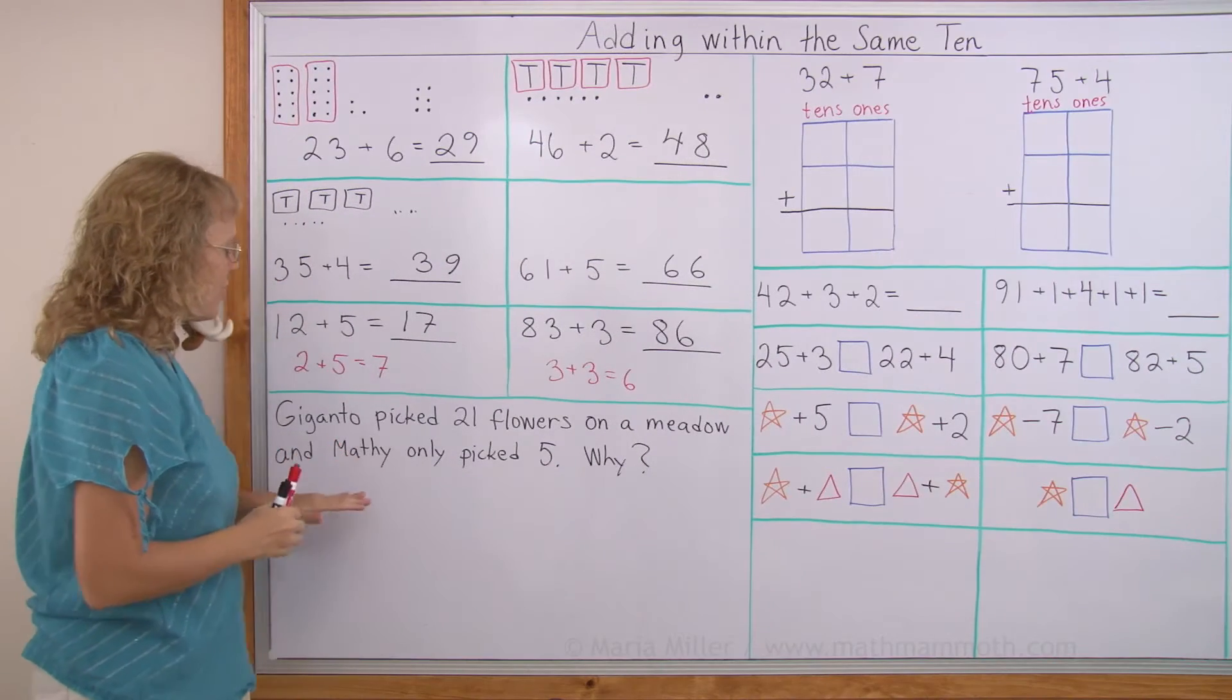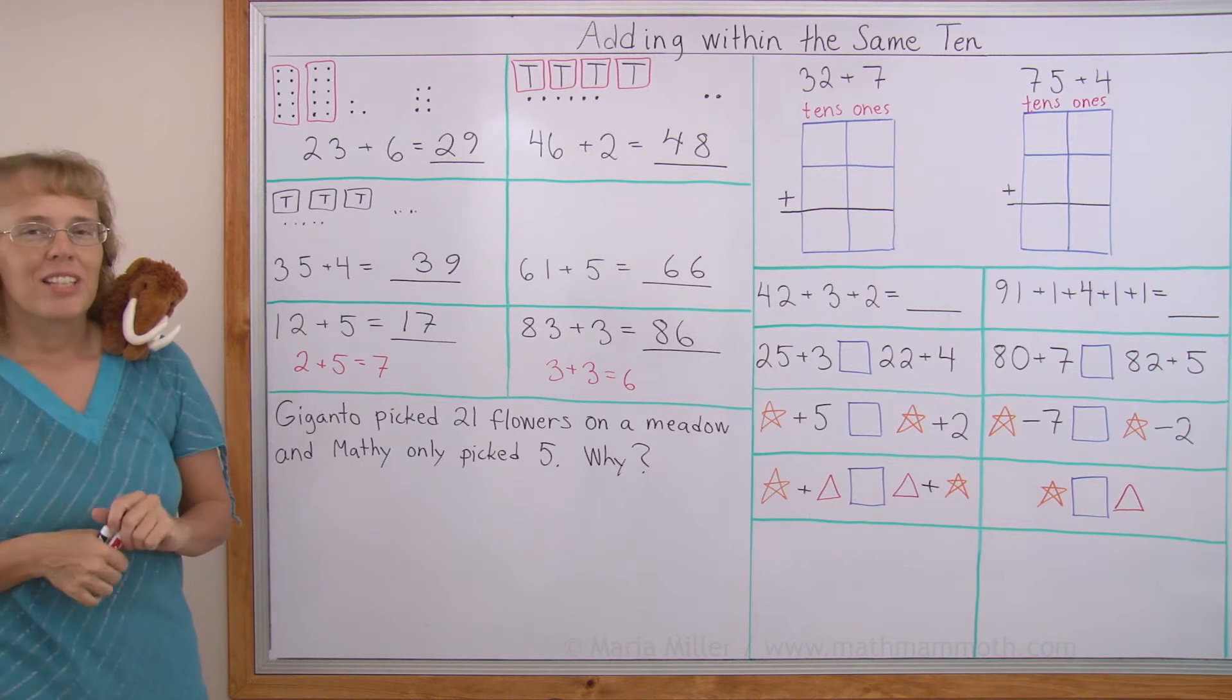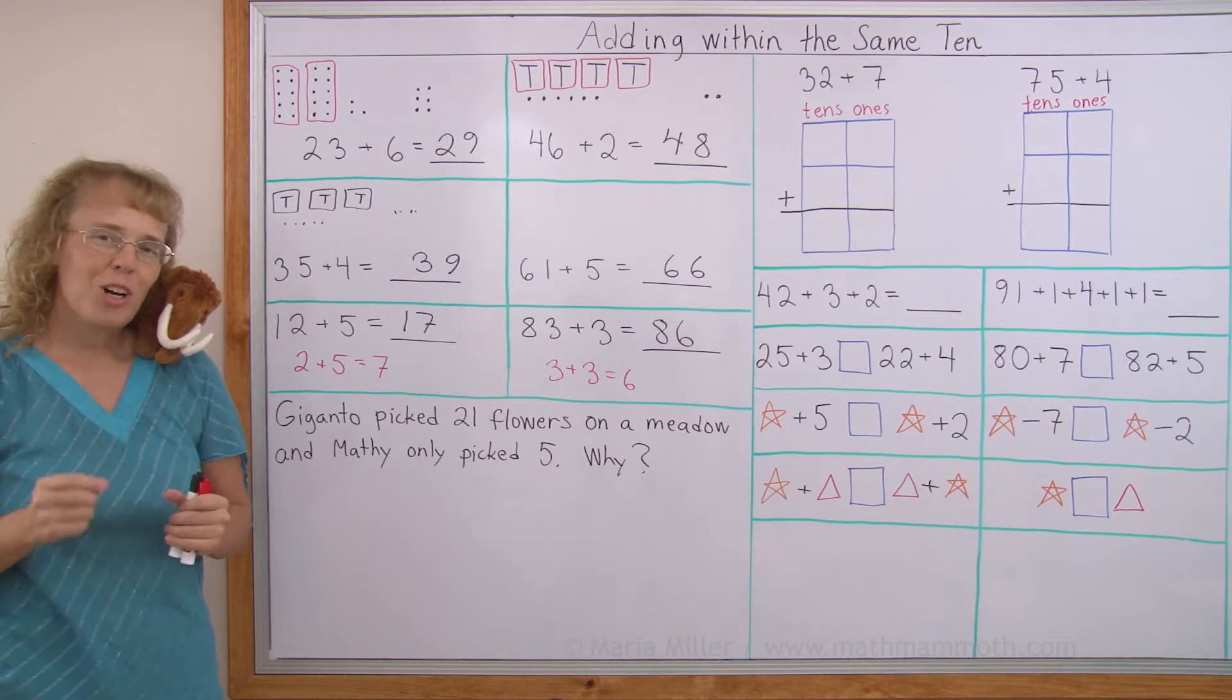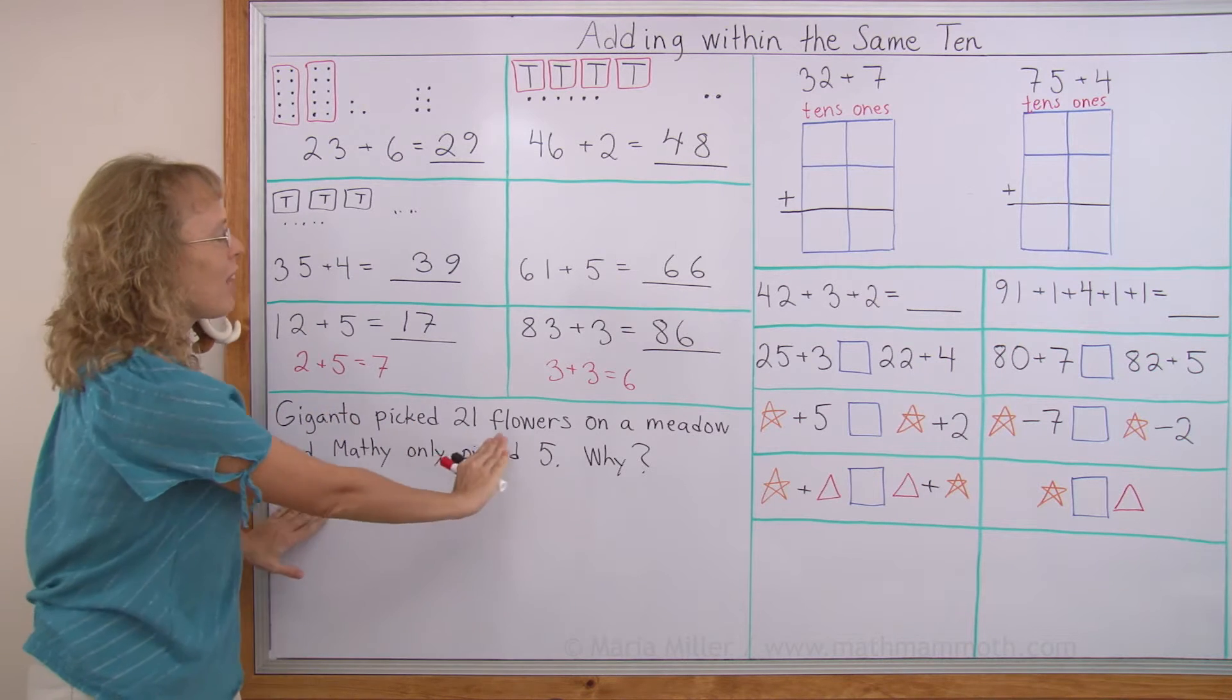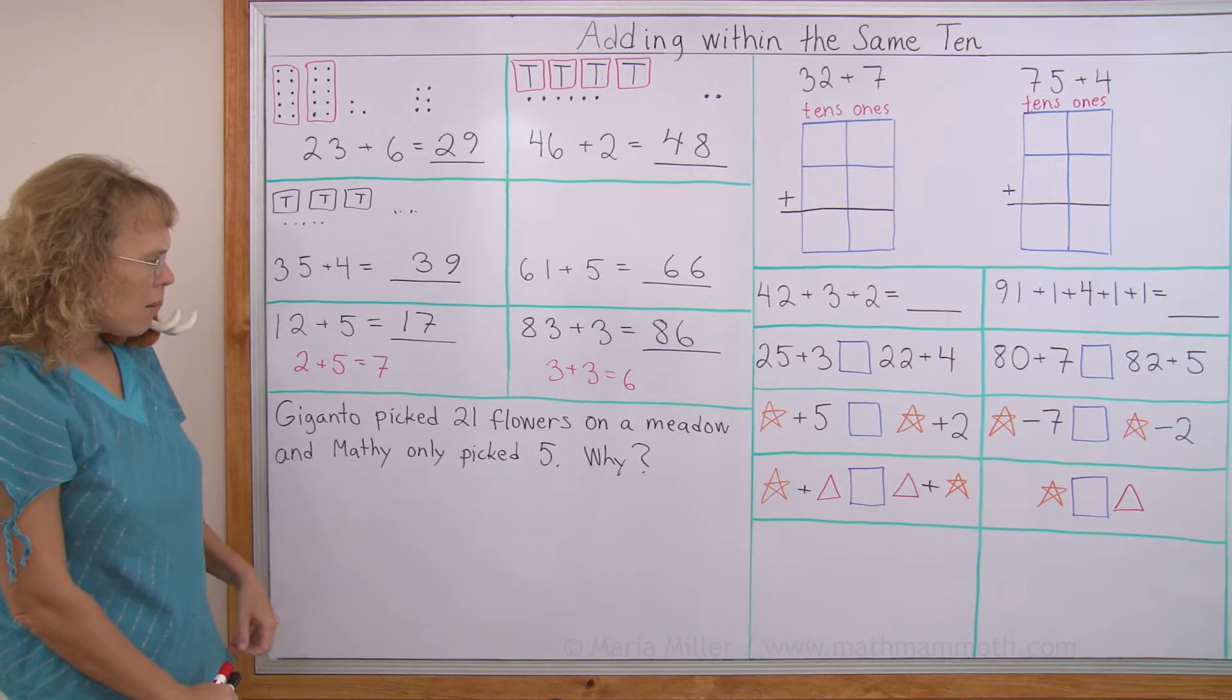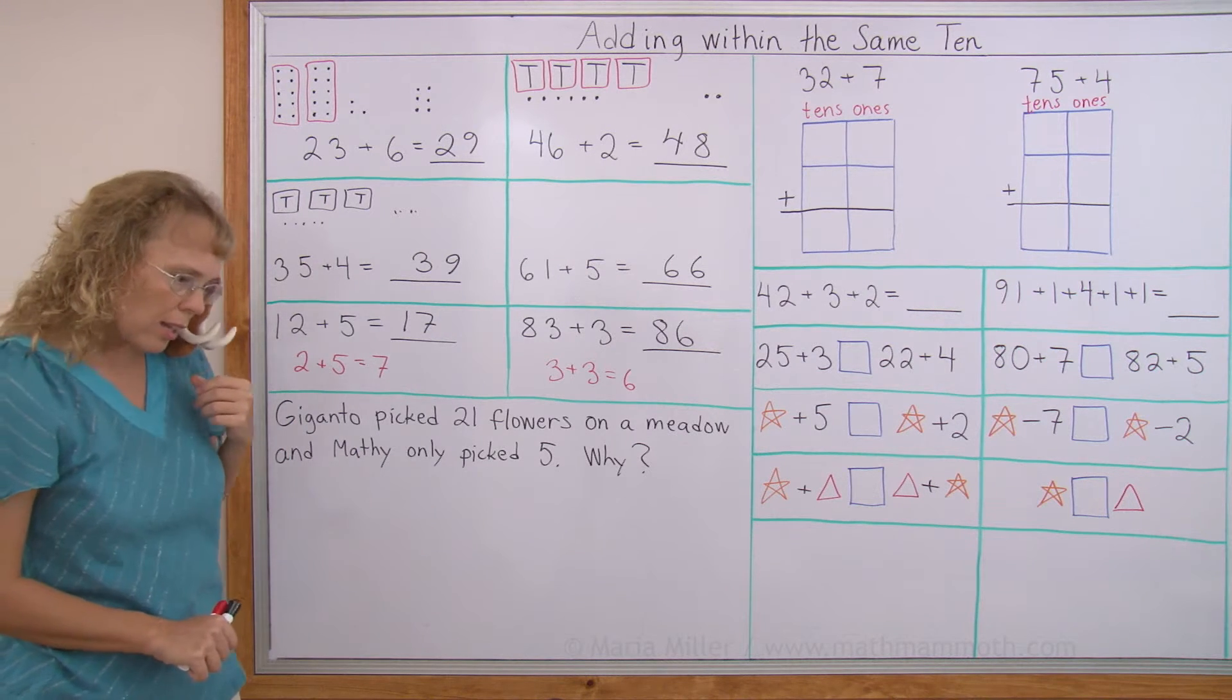Over here, Giganto picked 21 flowers. Giganto is Mathie's cousin, a mammoth. And I tried to get him to come to join us in this video. But he just couldn't come today. But I hope to have him for some other video. Giganto picked 21 flowers on a meadow. And Mathie only picked 5. Why? Mathie, you wrote this? That's not a good word problem.